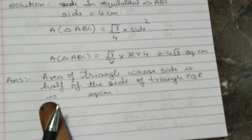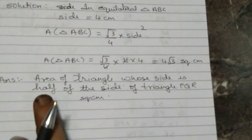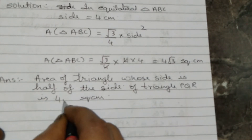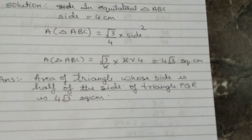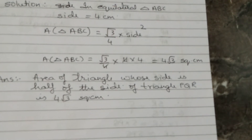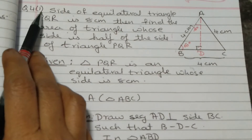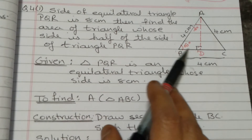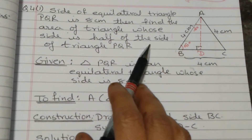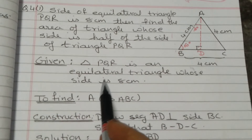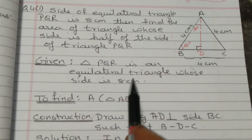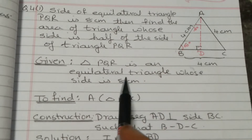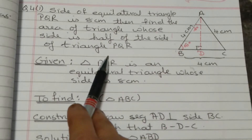Area of the triangle whose side is half of triangle PQR is 4 root 3 square centimetre. This was question number 4. The previous method used the formula root 3 upon 4 into side square — that is Method 1. Now this is the second method.